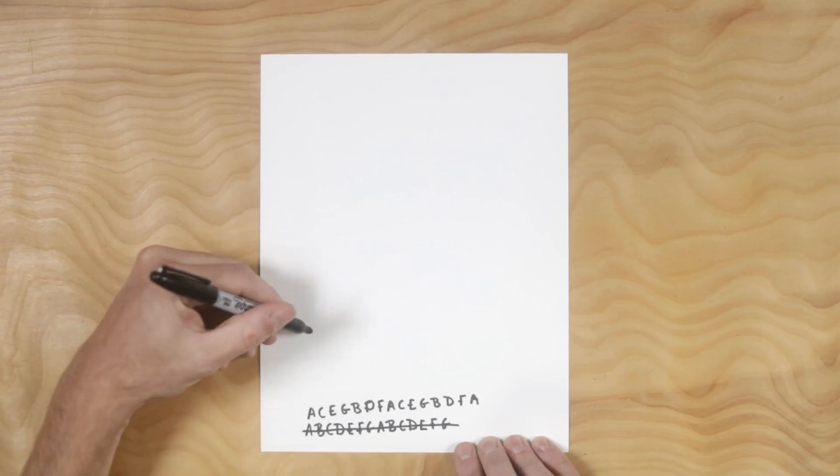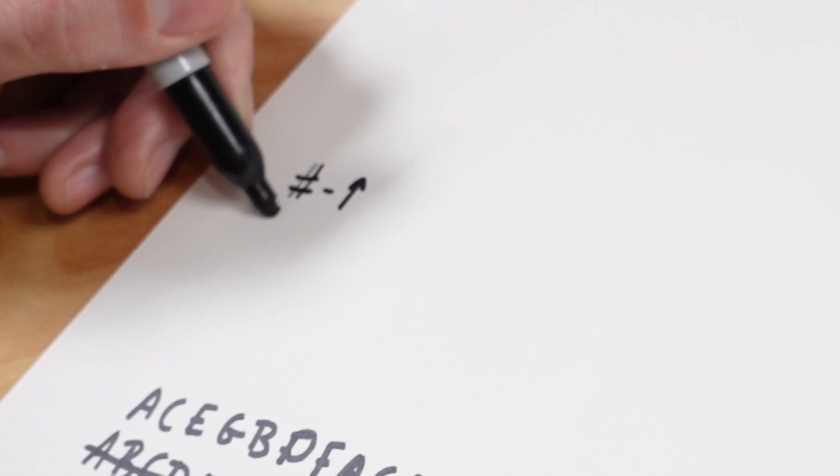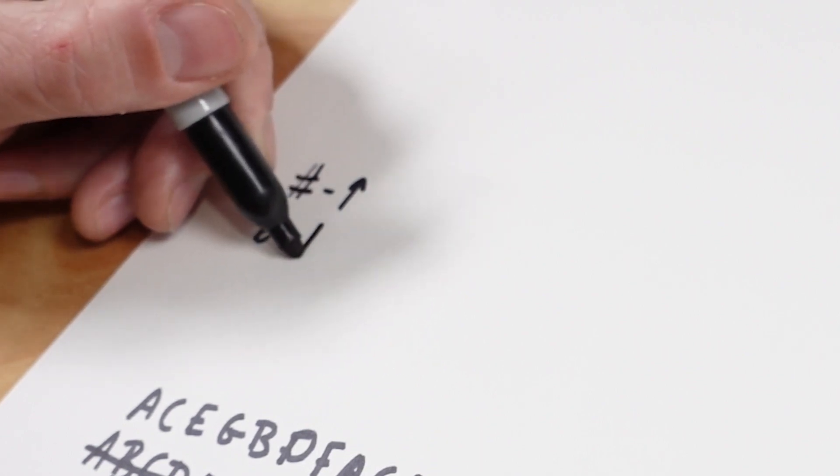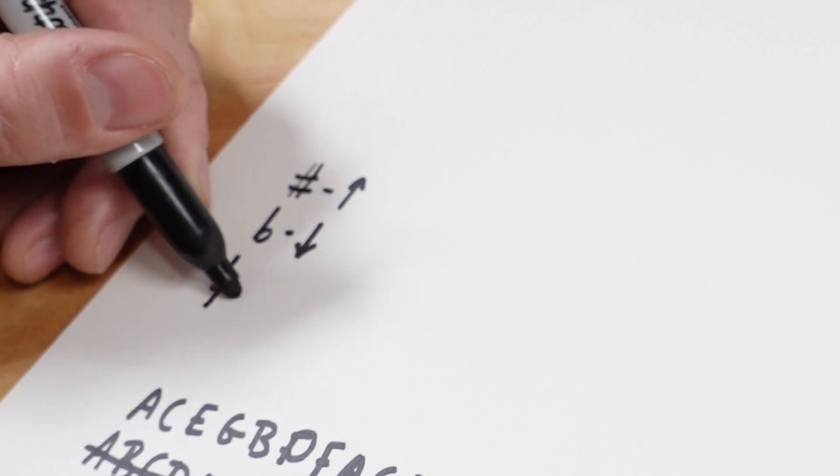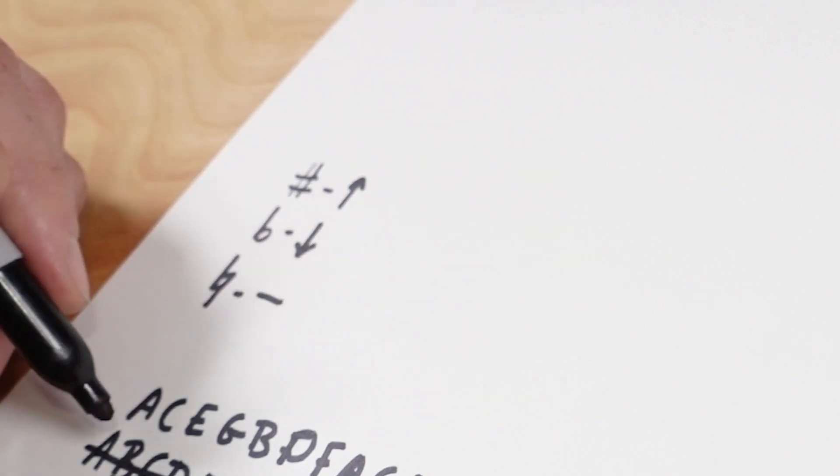Now next thing you need to know is what our accidentals are. This is a sharp and that means to go up a half step. This is a flat and it means to go down a half step. And this is a natural. That just means that the letter name is the letter name. And these accidentals go after the letters when we're writing them like this.